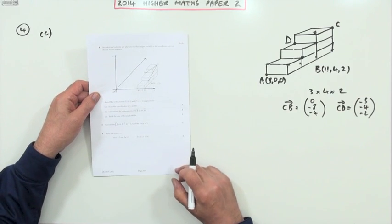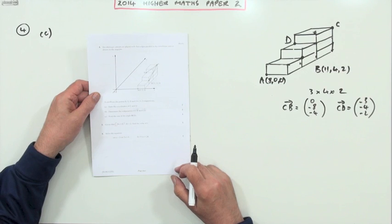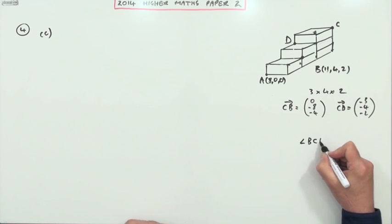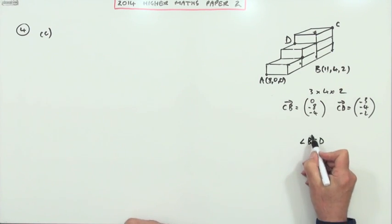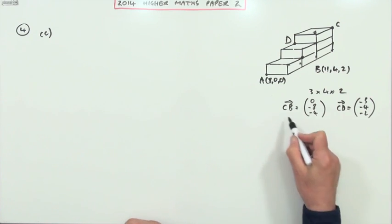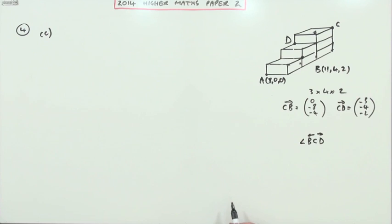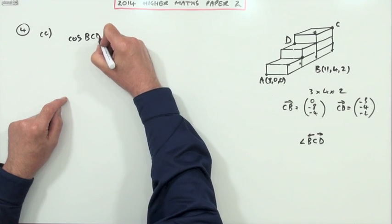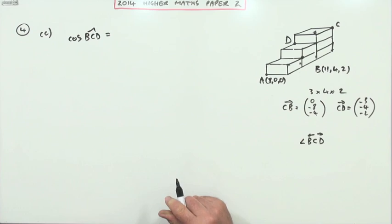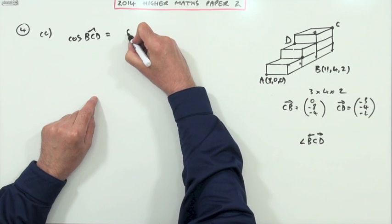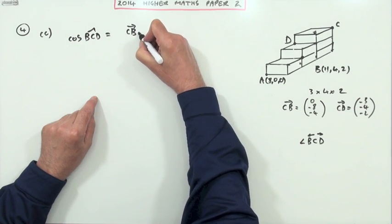And part C: find the size of angle BCD. Notice it says angle BCD, which means I want the vectors that radiate from that common point, the vertex of the angle. I want BC and CD, but that's what they asked you for anyway.